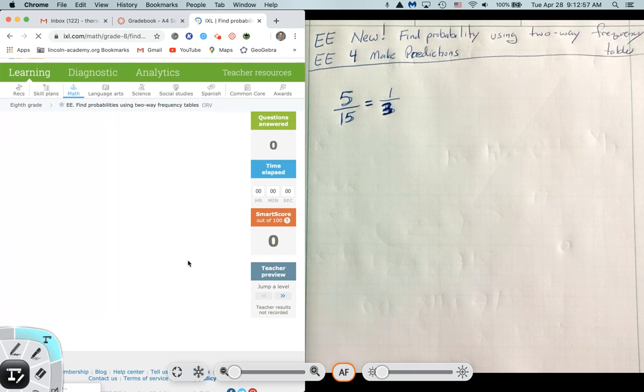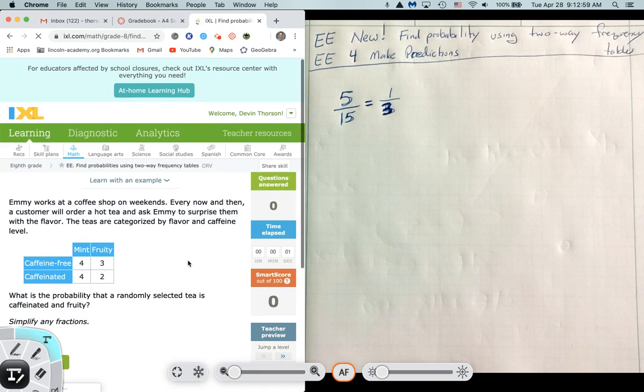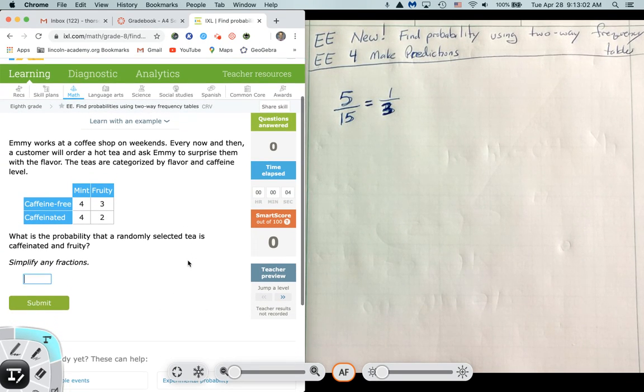With two-way frequency tables, they're going to give you a bunch of information. They've broken it into two types of categories, and one category will be in rows, the other category will be in columns. So I always recommend make sure you take the time to read.